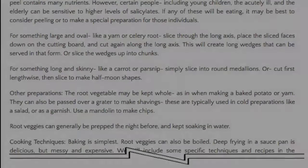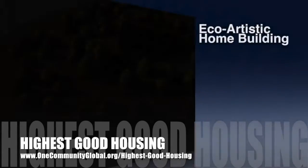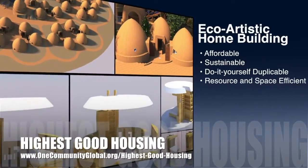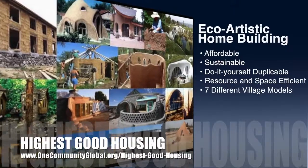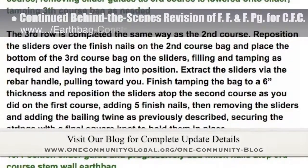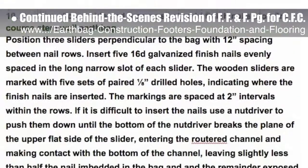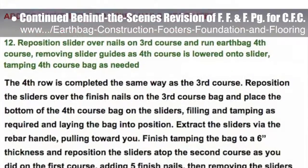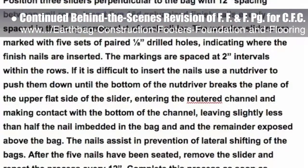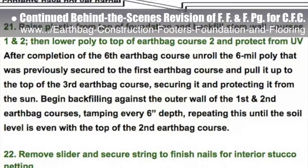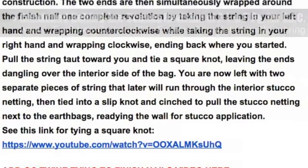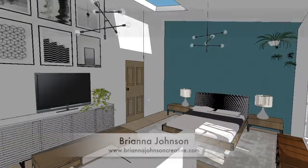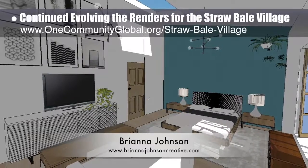One Community's approach to highest good housing is eco-artistic home building that is affordable, sustainable, do-it-yourself, duplicable, resource and space efficient, and consists of seven different sustainably constructed village models. This week the core team put another 10 hours into the behind-the-scenes revision for the footers, foundations, and flooring page for the crowdfunding campaign, focusing on editing and creating narratives for section 10: construction of stem wall and dome. We combined multiple entries into single entities and realigned others — we're now 85% complete with this total update and rewrite.